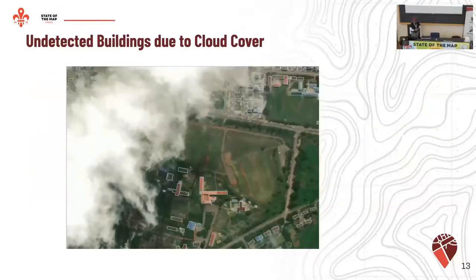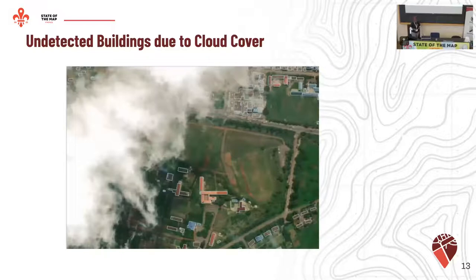The other thing we also noted is undetected buildings due to cloud cover. If you can't see anything, there's really nothing there. So mappers in this case had to actually go ahead and try to digitize the buildings manually, since there's no predicted building.